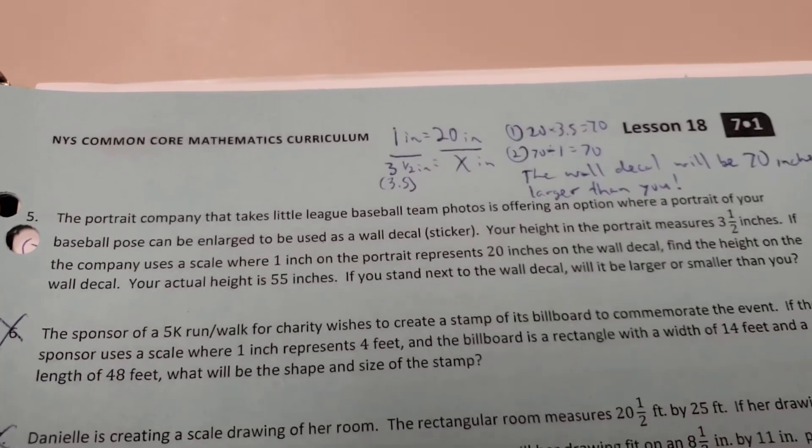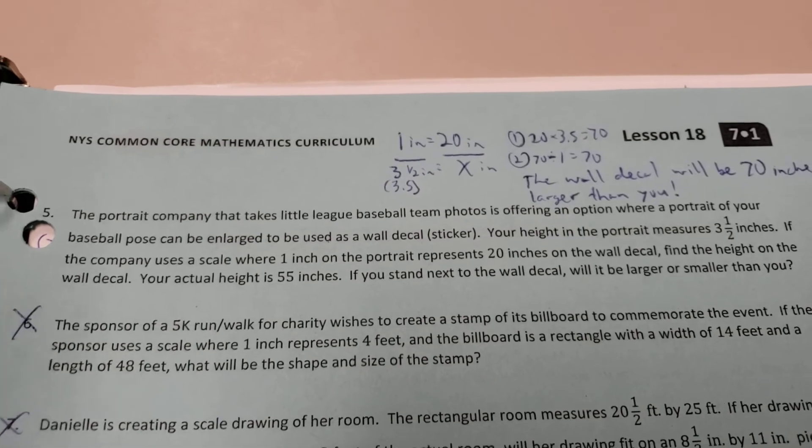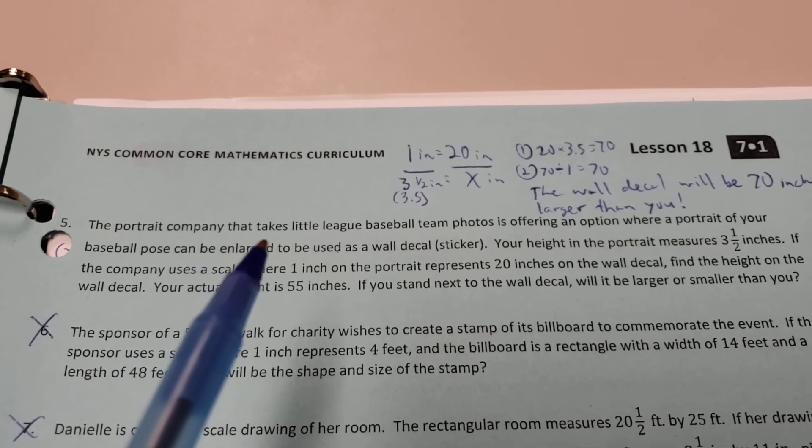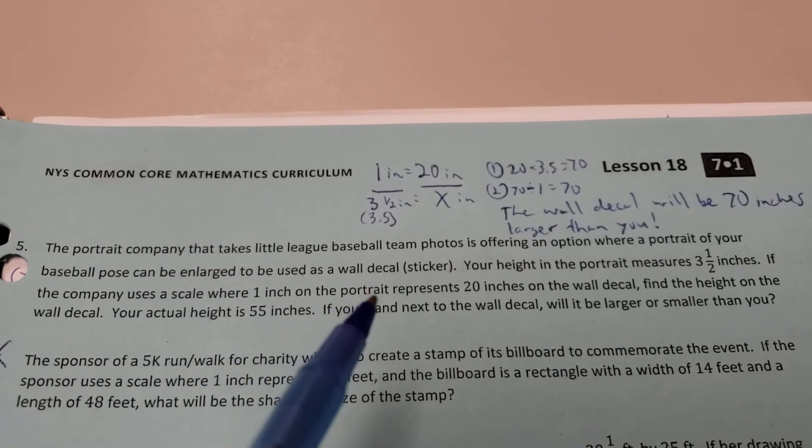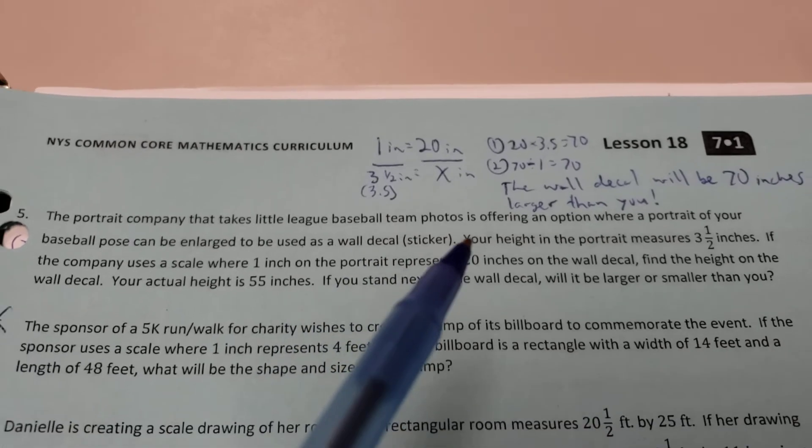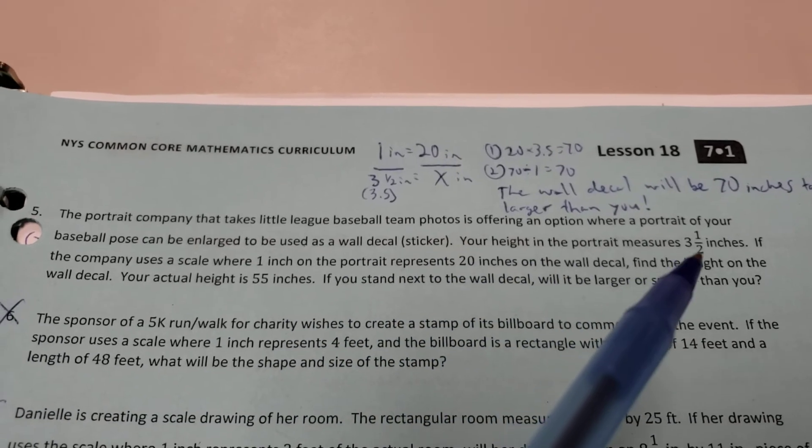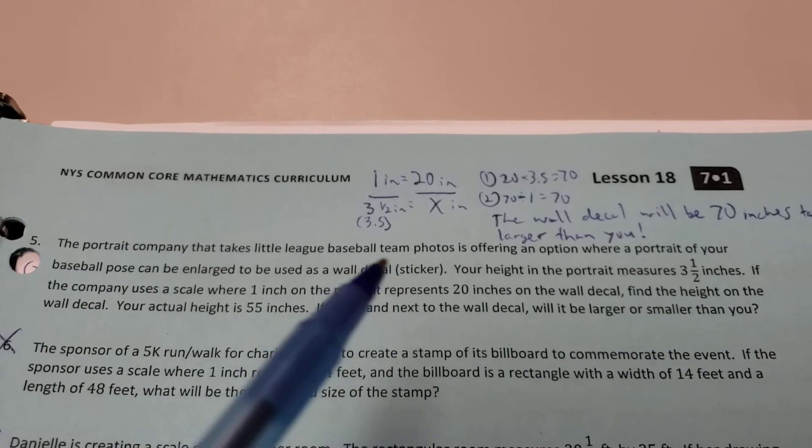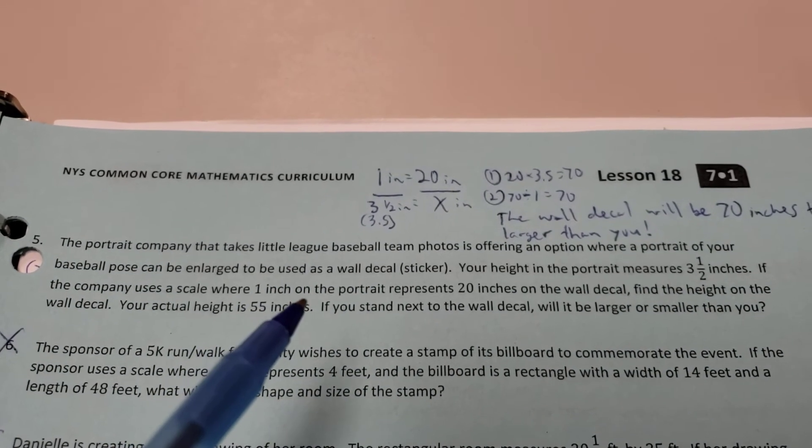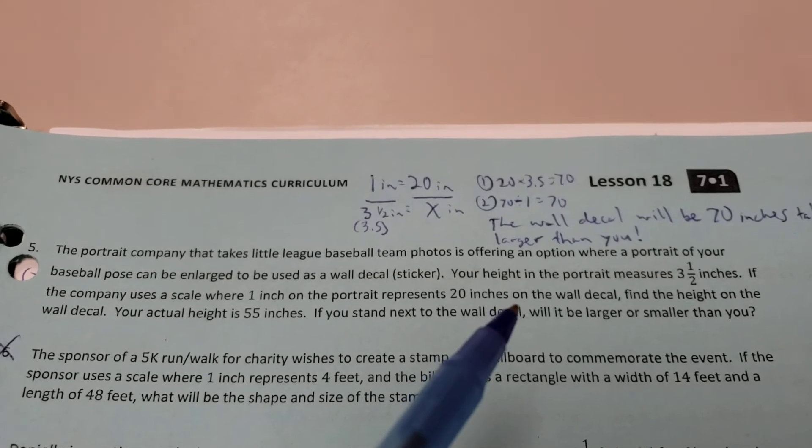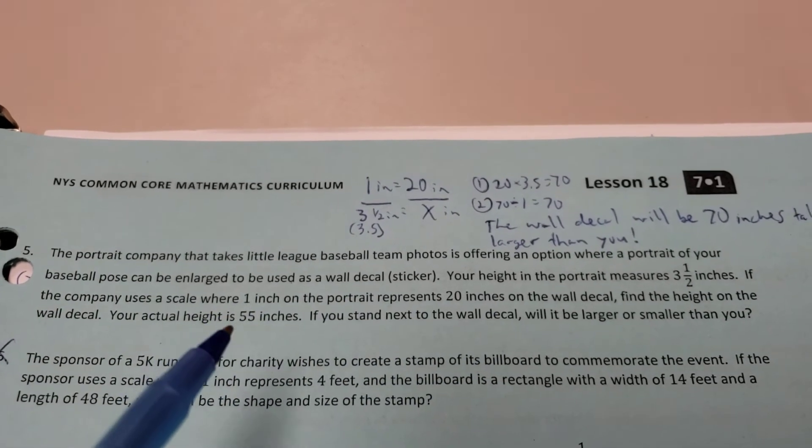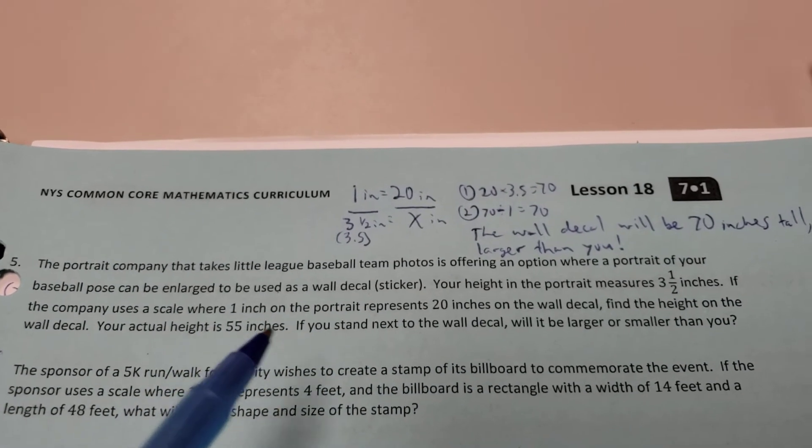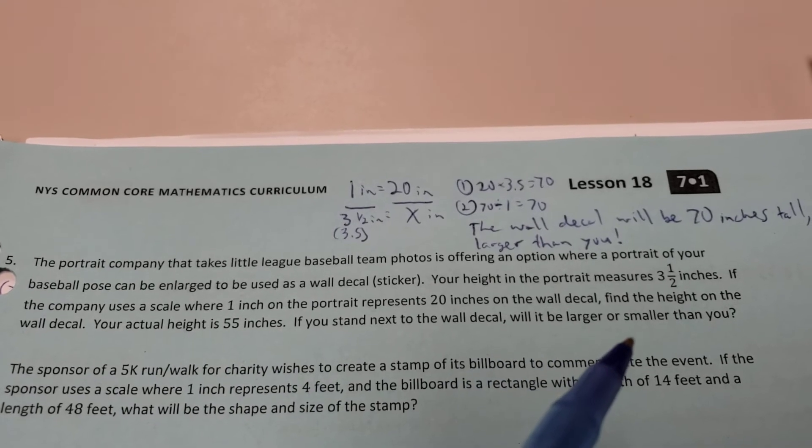Number five. They have a portrait company is getting these big wall stickers made up for the Little League baseball team players. Your height in the portrait measures 3 1/2 inches. That's what it's like right now. The scale is one inch in the portrait represents 20 inches in the wall decal. And they want to know if your actual height is 55 inches, that wall decal will be larger or smaller than you.